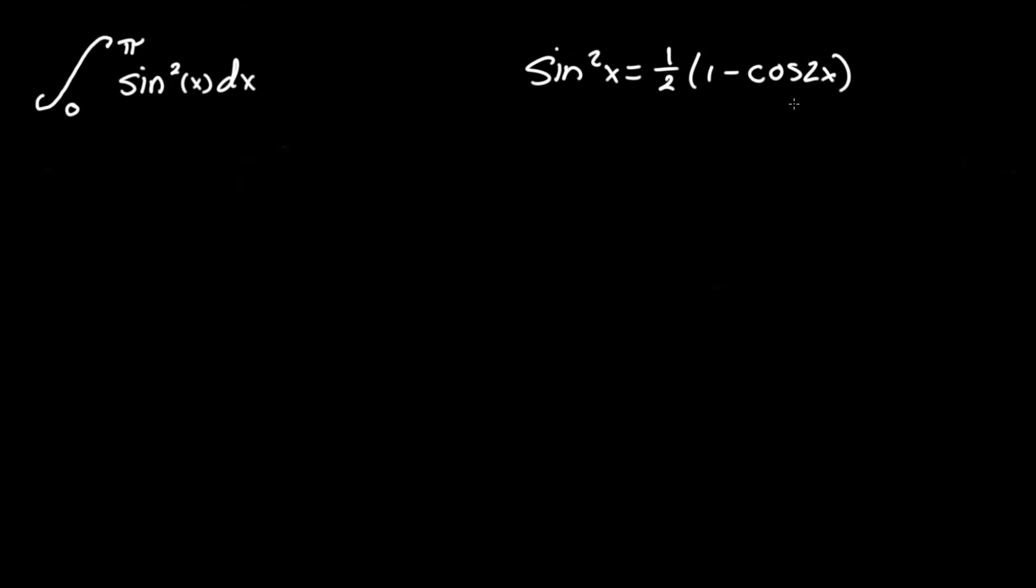This is what we call a half-angle identity, and using this we can actually now integrate one minus cosine of 2x, treating one half as the constant. We can't integrate sine squared x automatically since u-substitution would be useless in this case. That would just leave us with another trig variable. So essentially what we're going to have to do is now simply plug that in.